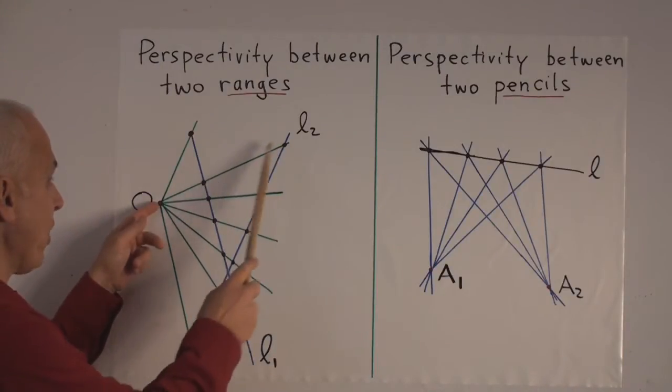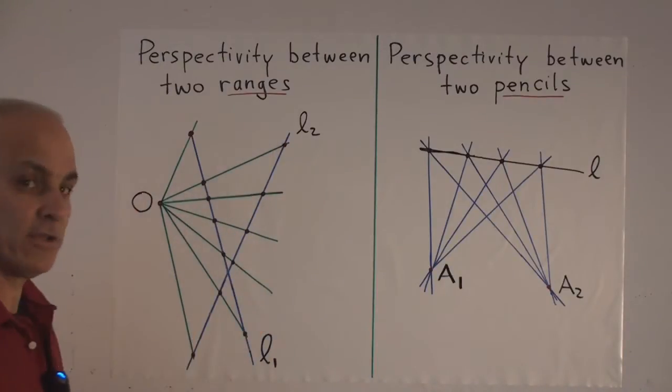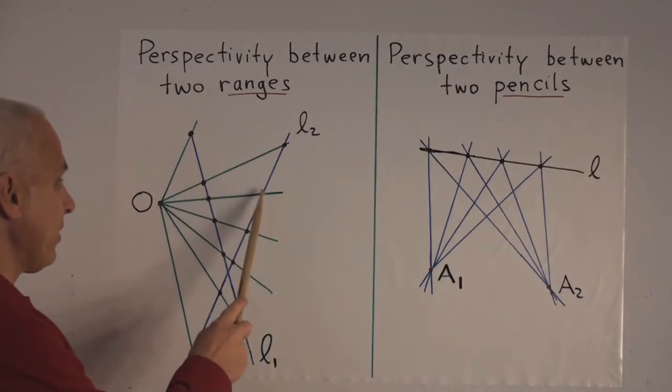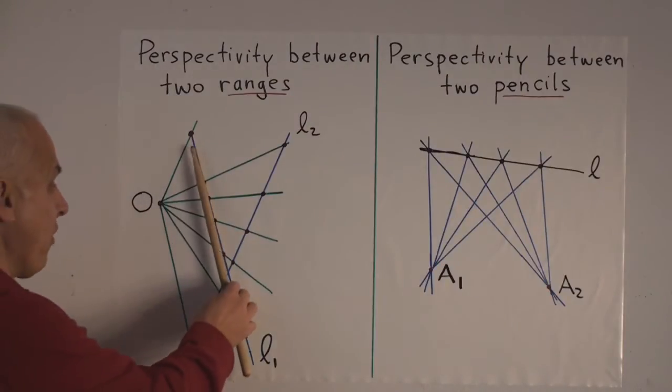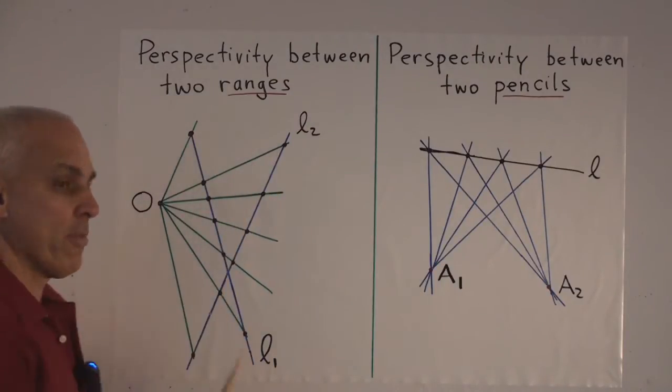That associates then this point on L1 with this point on L2, this point on L1 with this point on L2, this point with this point, this point and this point, and so on. That gives an association of all the points on L1 with all the points on L2.